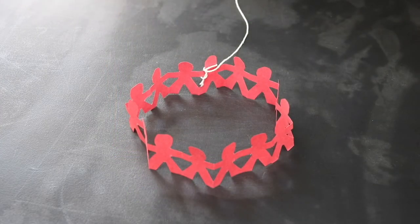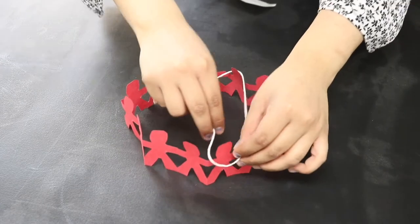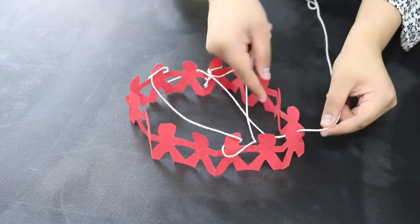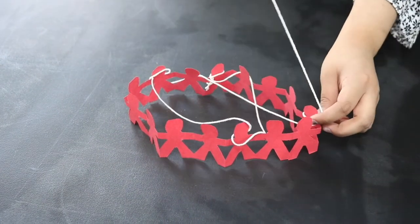For this next step, you might want to gather up your family. I will be demonstrating using paper people. Somebody in the group will start by holding all the string. This person represents the sun and the start of each food web.